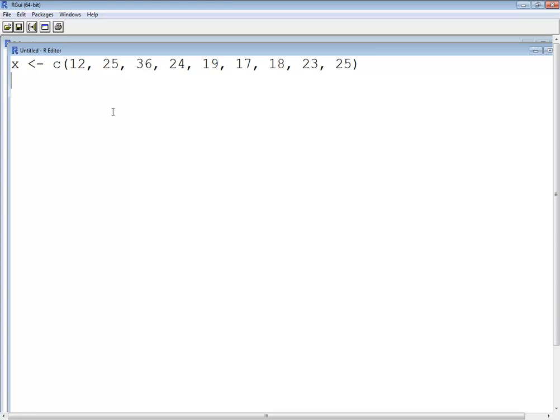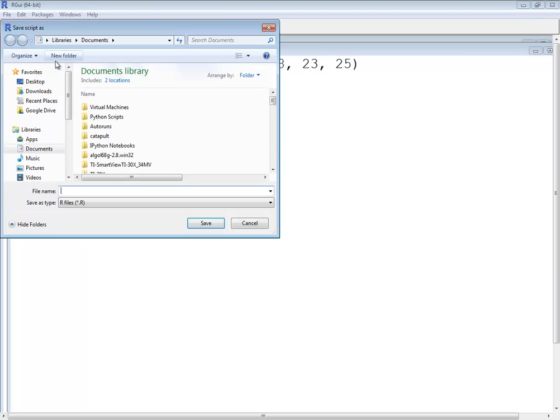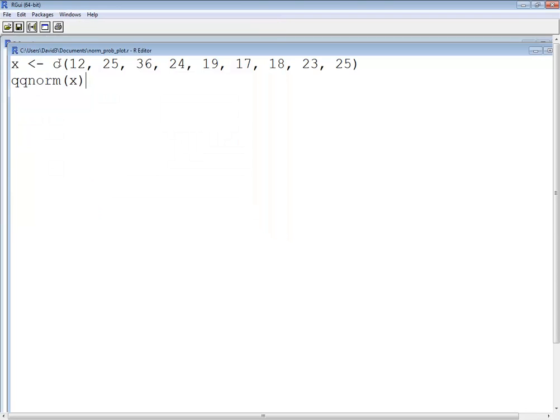Okay, now first let's look at qqnorm of X. And let me save this. And I'll call this norm probability plot dot R. There's different options, you know, save, save as, and so forth.